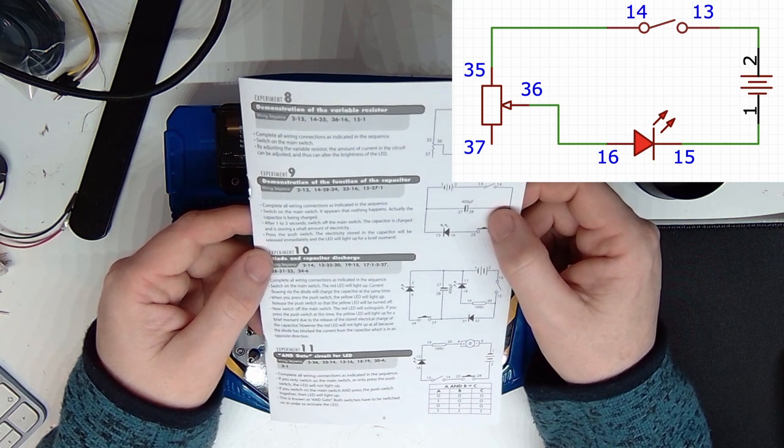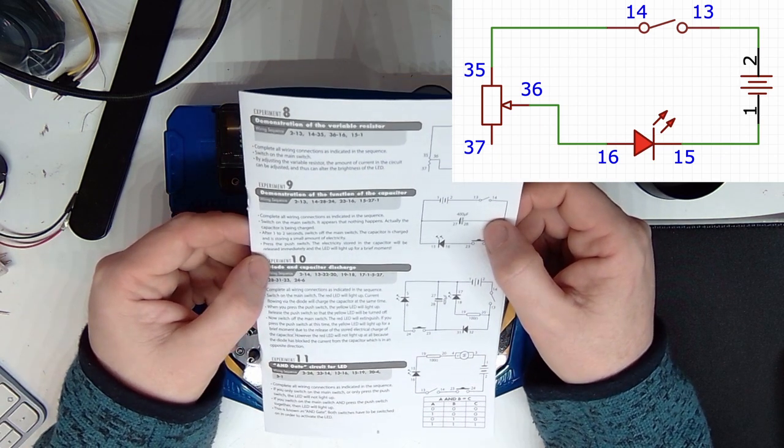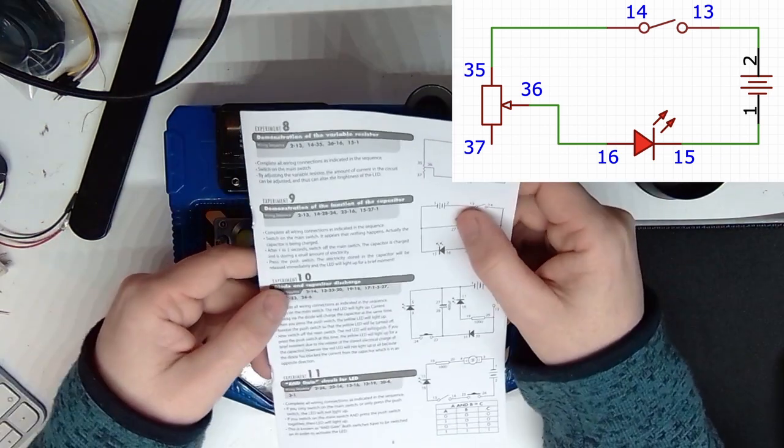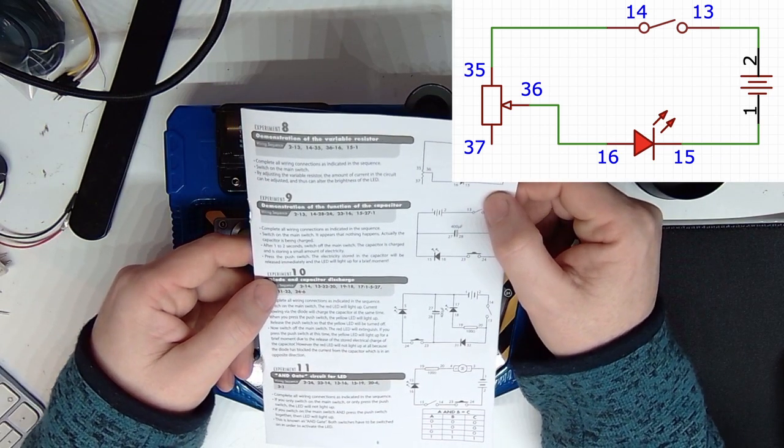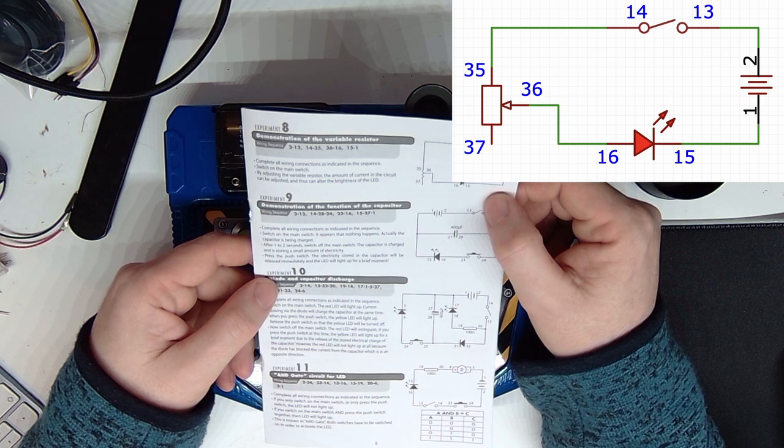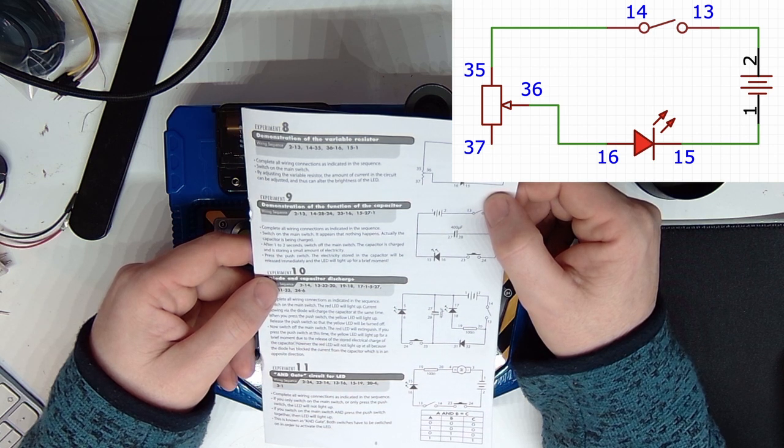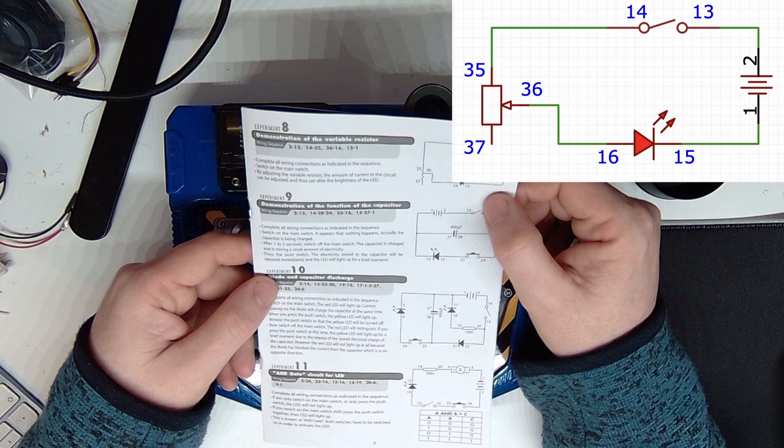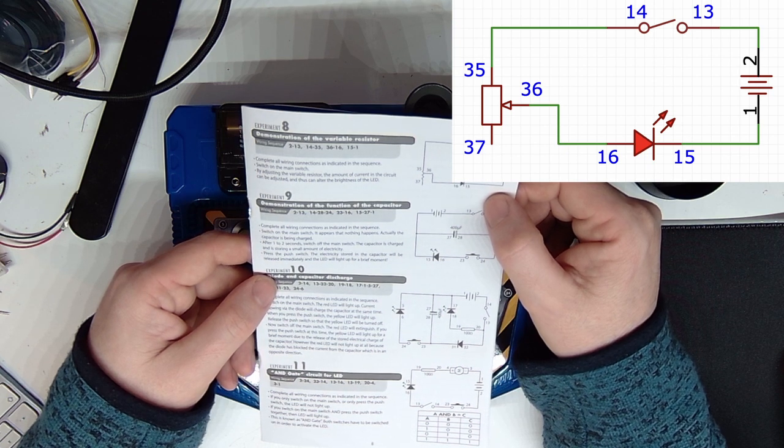Right, Experiment 8. Demonstration of the Variable Resistor. Complete all wiring connections as indicated in the sequence, switch on the main switch. By adjusting the variable resistor, the amount of current in the LED can be adjusted and thus can alter the brightness of the LED.